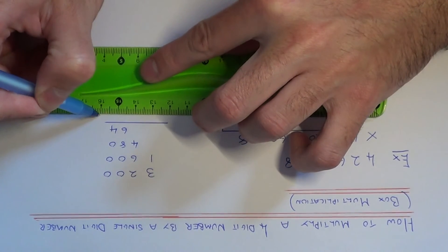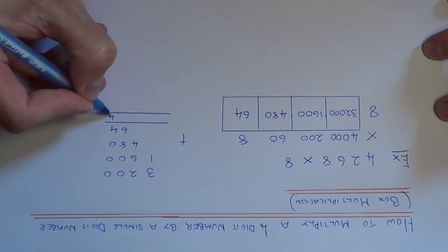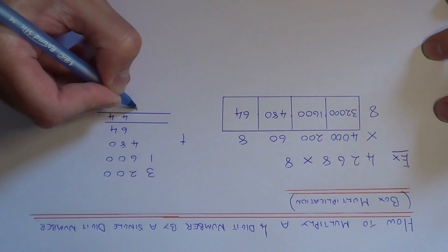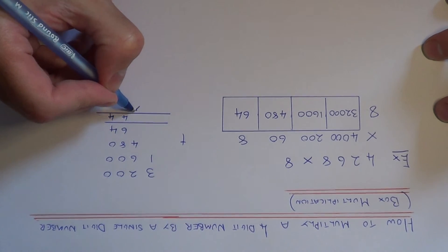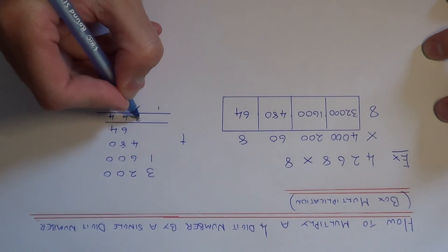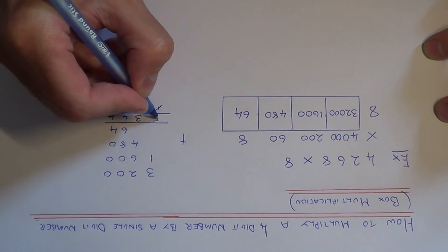So we just need to add these up now. So we've got 4, 8 add 6 is 14, 6 add 4 is 10, plus 2 is 12, plus the one underneath is 13, 3 add 1 is 4, plus the one underneath is 5.